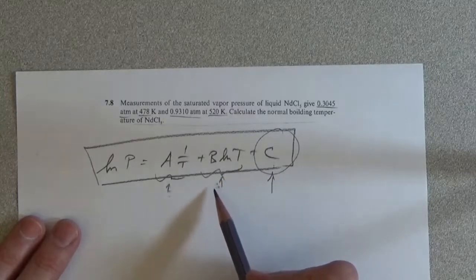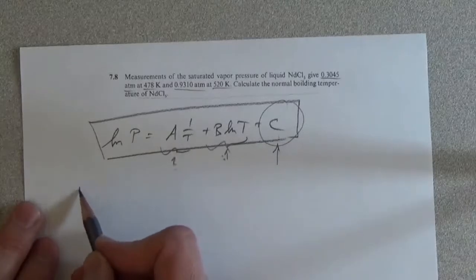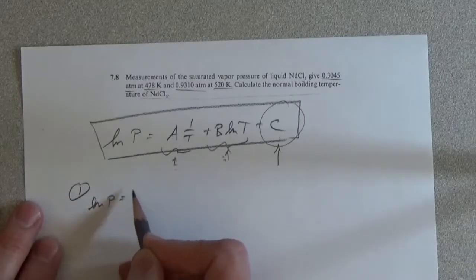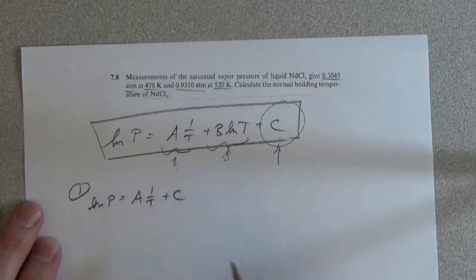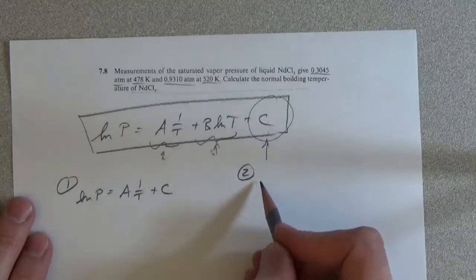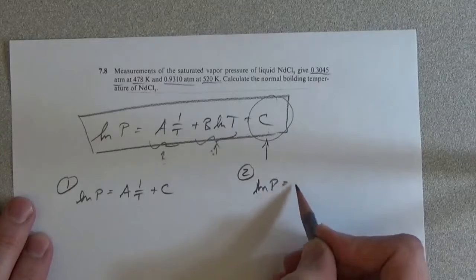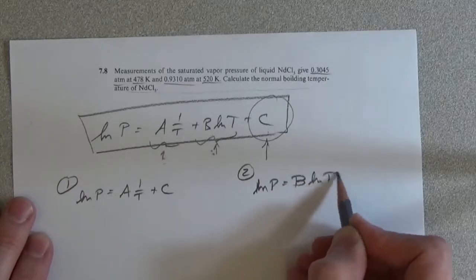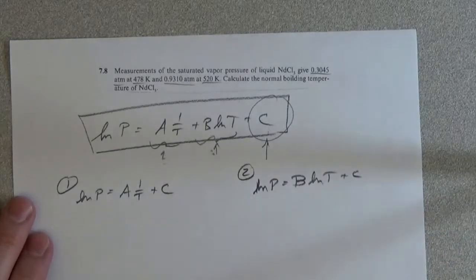The way I approach the problem is I first solved for natural log P equal to A(1/T) plus C. And then I solved for natural log P equal to B·natural log T plus C. I tested the two expressions to see how well they operated.